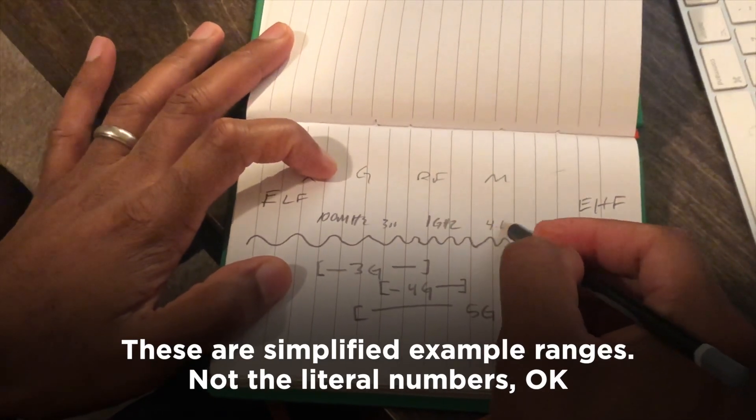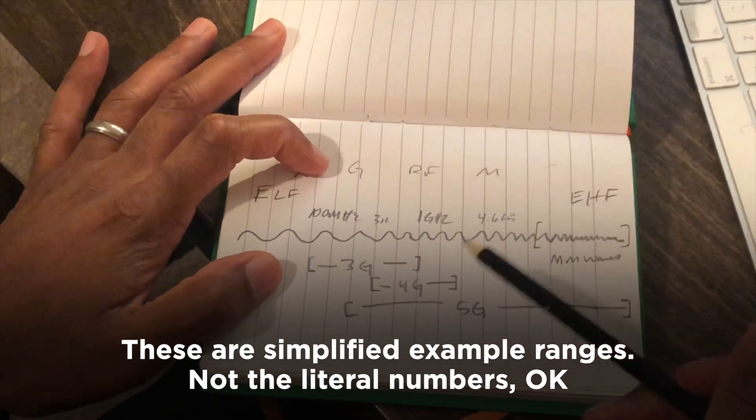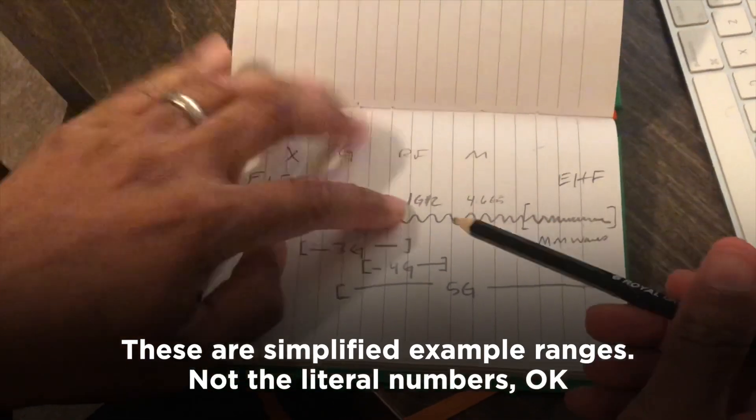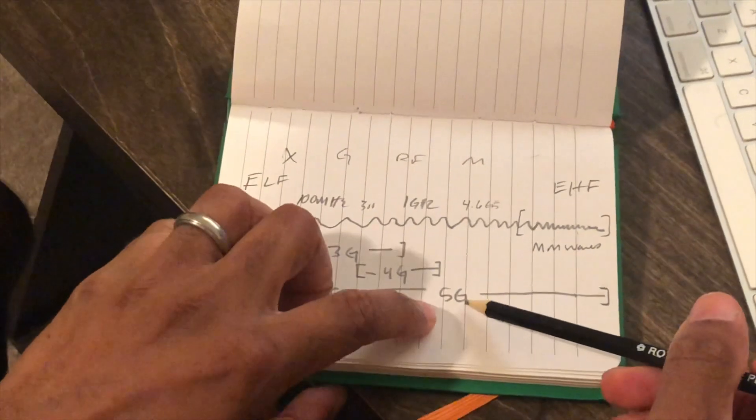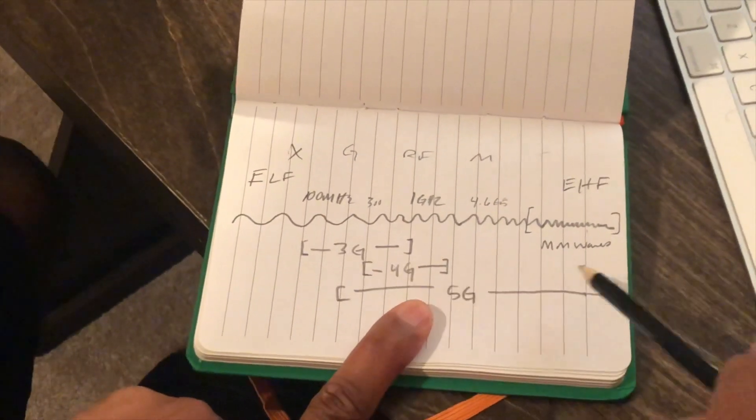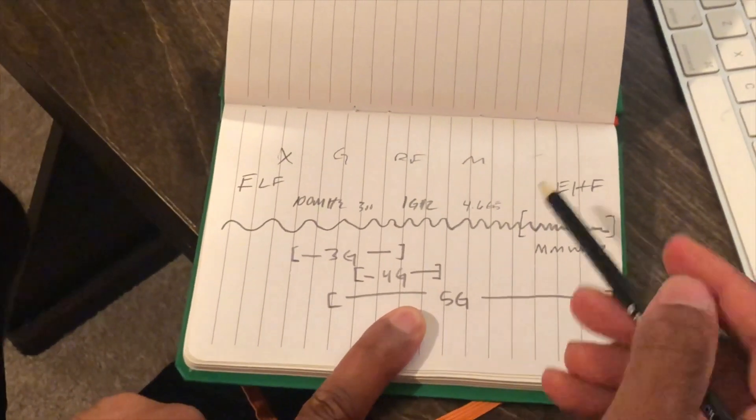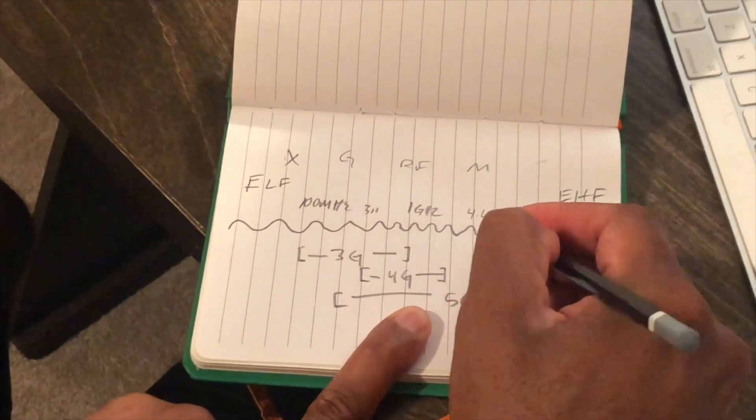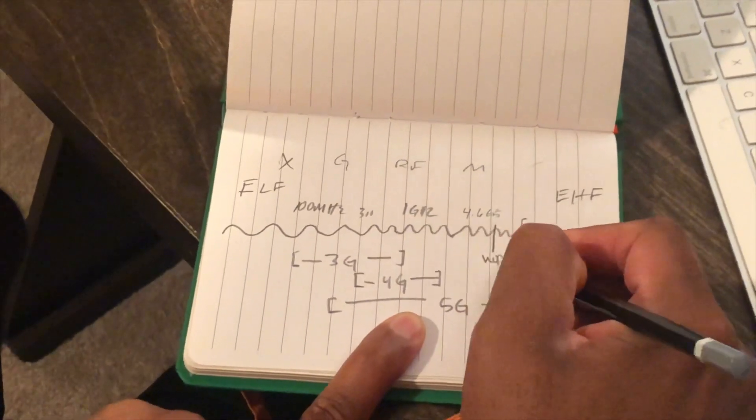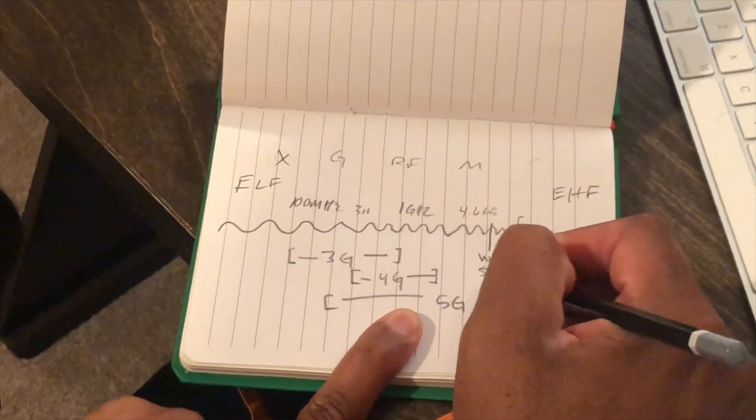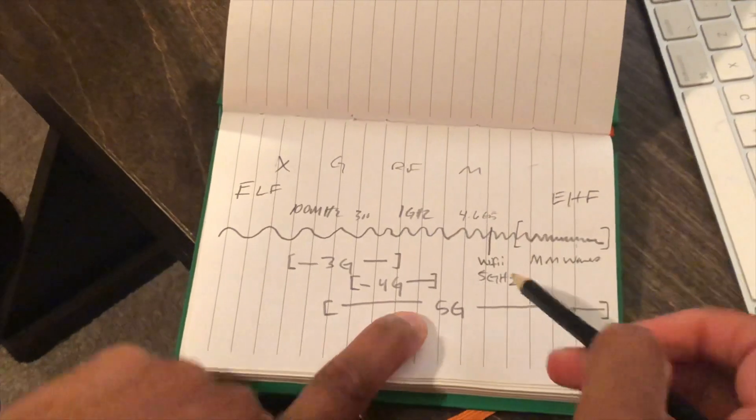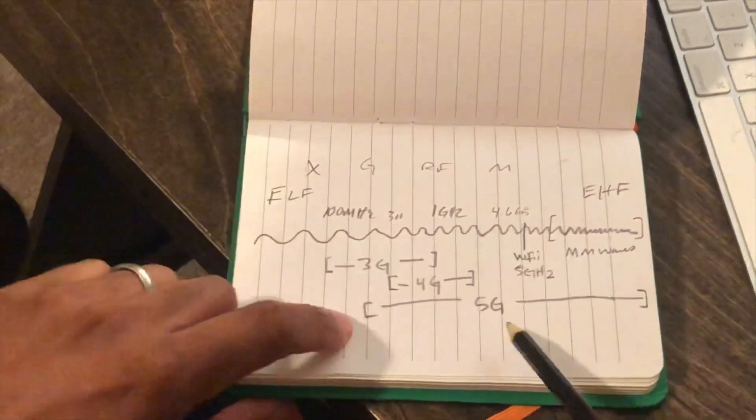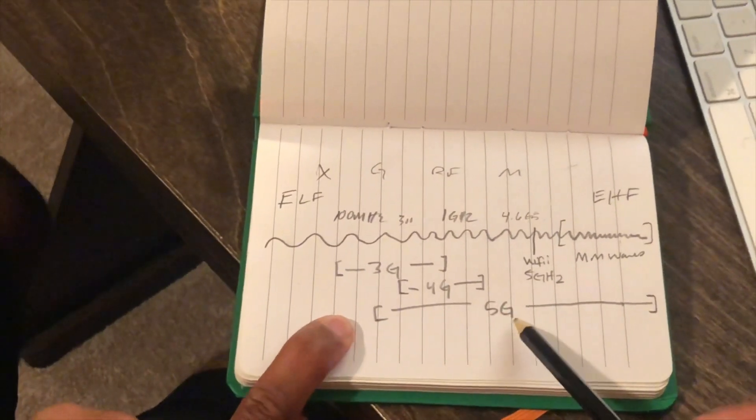4G was somewhere from 300 megahertz to 4.6 gigahertz. If you've ever seen the 5 GHz on your Wi-Fi router, that should not be confused with 5G cellular radiation or cellular technology because it's different. The 5 gigahertz Wi-Fi spectrum is literally just this one zone.